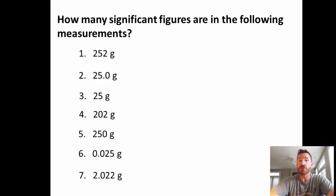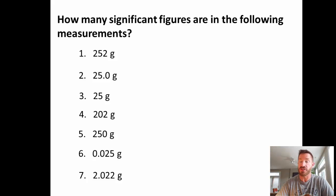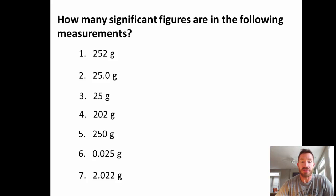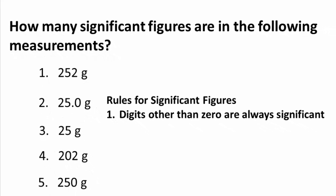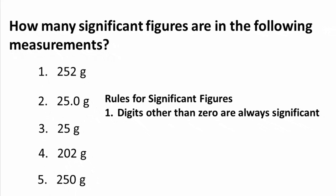How many significant figures are in the following measurements? I have seven numbers here, so we're going to go through the rules for significant figures. The first rule: digits other than zero are always significant. So for the number 252, we have a 2, a 5, and a 2 — all non-zeros. This gives us three significant figures.